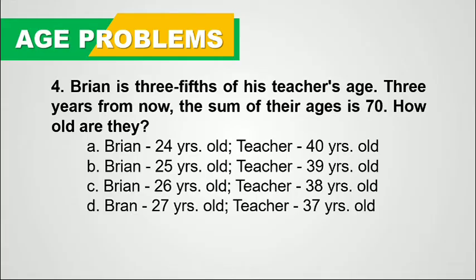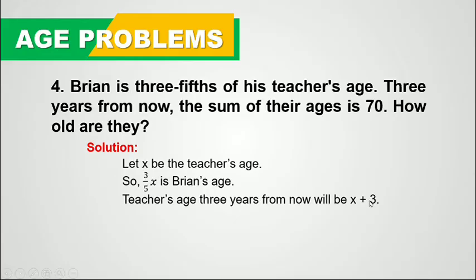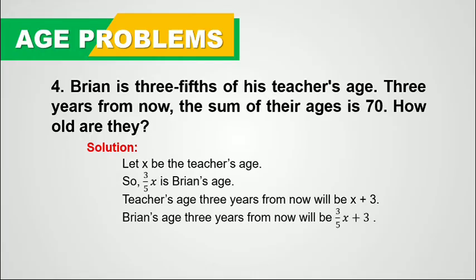In solving this, we translate the statements into mathematical expressions. Brian's age is 3 fifths of his teacher's age, so let x be the teacher's age. Then Brian's age is 3 fifths x. Three years from now, the teacher's age will be x plus 3, and Brian's age will be 3 fifths x plus 3. It is said that the sum of their ages three years from now is 70, so the equation is: (x plus 3) plus (3 fifths x plus 3) equals 70.